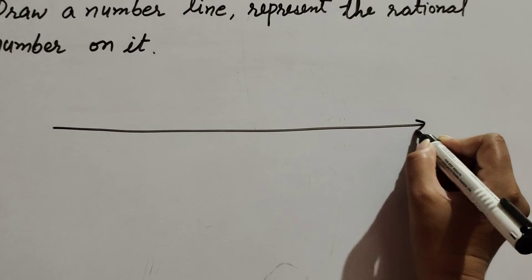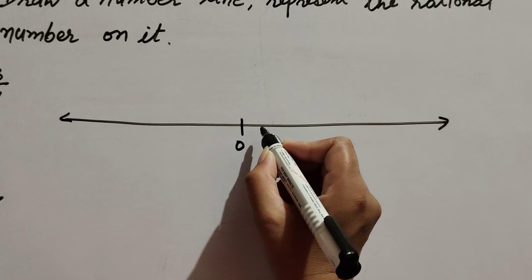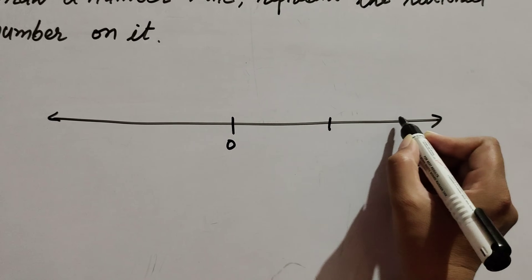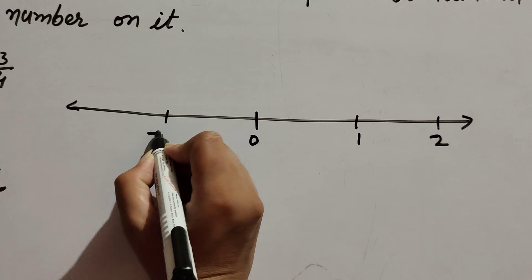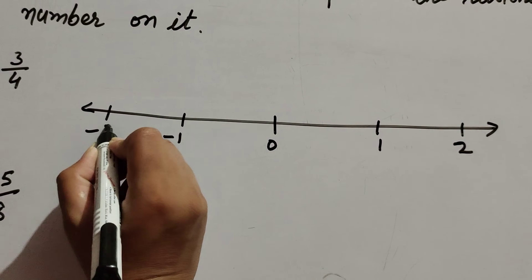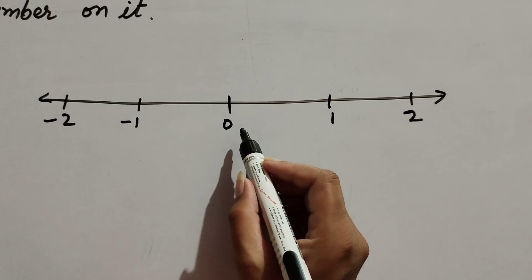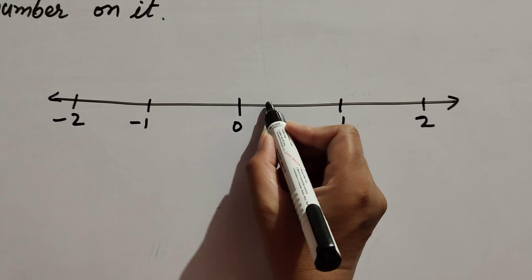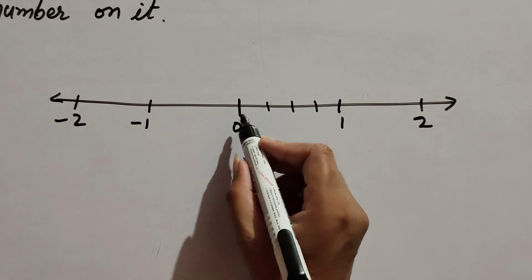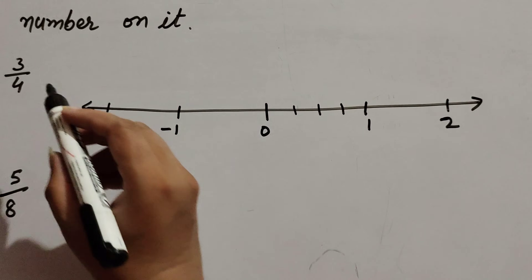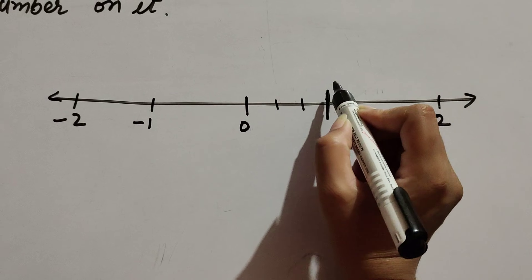The first part is three over four. We draw a line and divide it into equal sections: zero, one, two, and on the left hand side negative numbers, minus one, minus two. We have the number three over four — it is a positive rational number — so we divide the section zero to one into four equal parts. This line represents the number three over four.